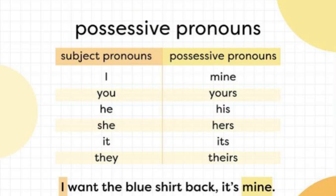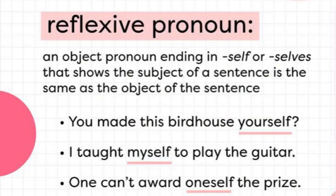اس slide سے possessive pronoun سمجھئے — ایک column میں subjective pronoun لکھا ہے، دوسرے میں possessive pronoun۔ Subjective pronoun 'I' ہے — جب possession ظاہر کرنا ہو تو 'mine' کہتے ہیں۔ 'You' کے لئے 'yours'، 'he' کے لئے 'his'، 'she' کے لئے 'hers'، 'it' کے لئے 'its'، 'they' کے لئے 'theirs'۔ نیچے جملہ لکھا ہے: 'I want the blue shirt back — it's mine۔' یہاں 'mine' آپ کا possessive pronoun ہے جو ملکیت ظاہر کر رہا ہے۔